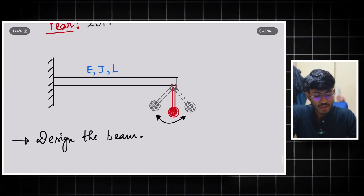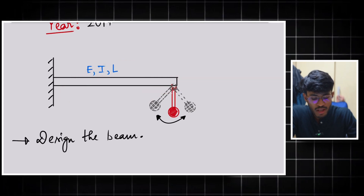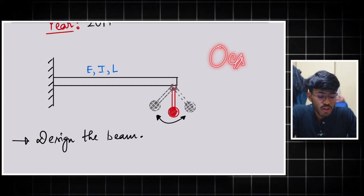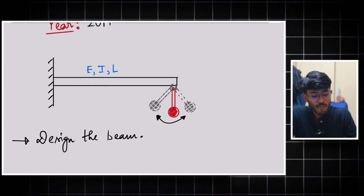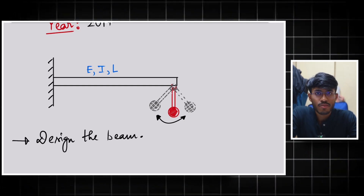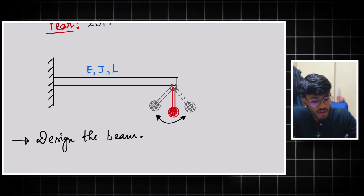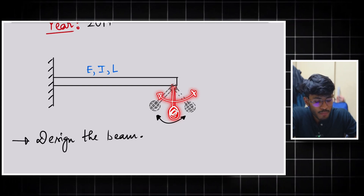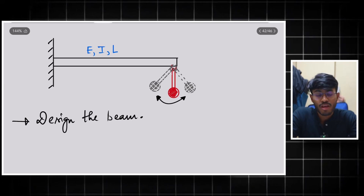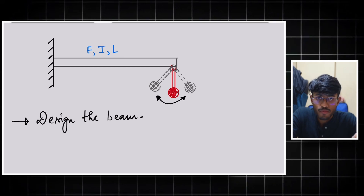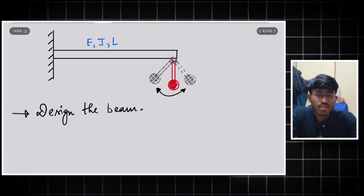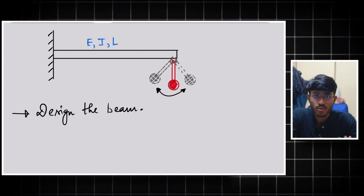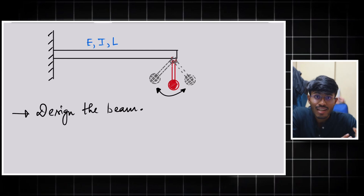The problem involves a beam with given Young's modulus, moment of inertia of the cross section, and length L. Unlike typical GATE-type questions where we get a simple load, here we have a pendulum that is swinging. You have to design the beam, and this is a very beautiful open-ended problem — you have not been told which theory to use, so you have to think by yourself and go by your logic.